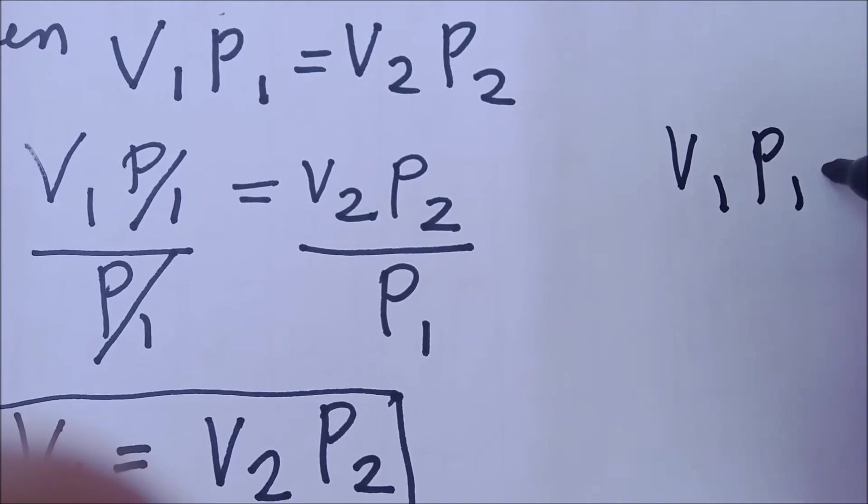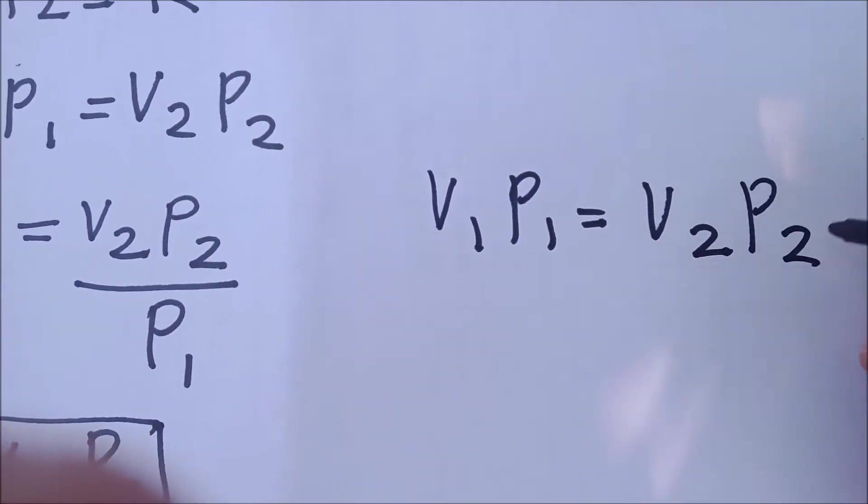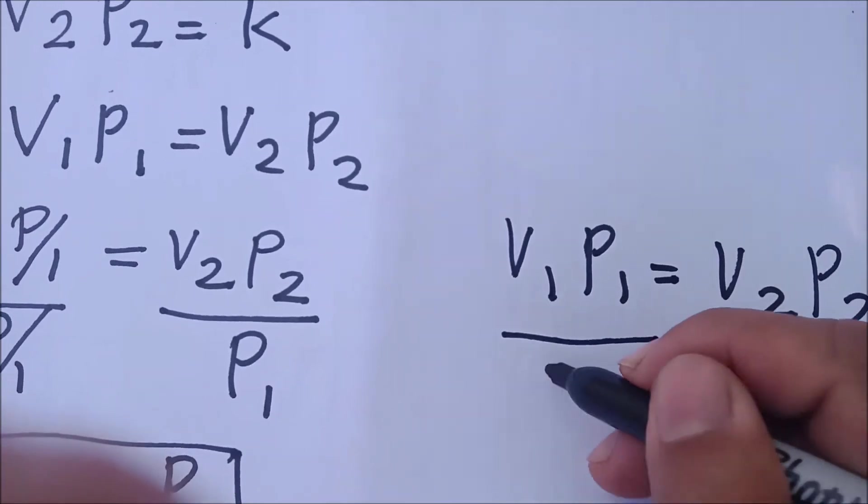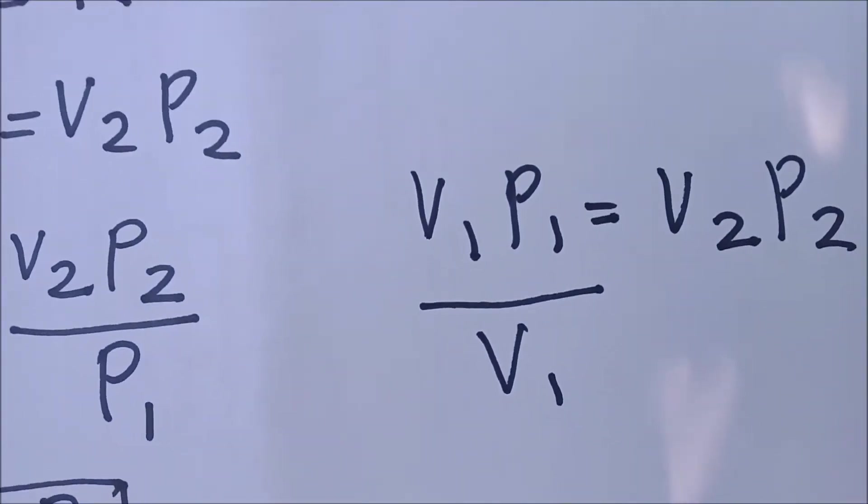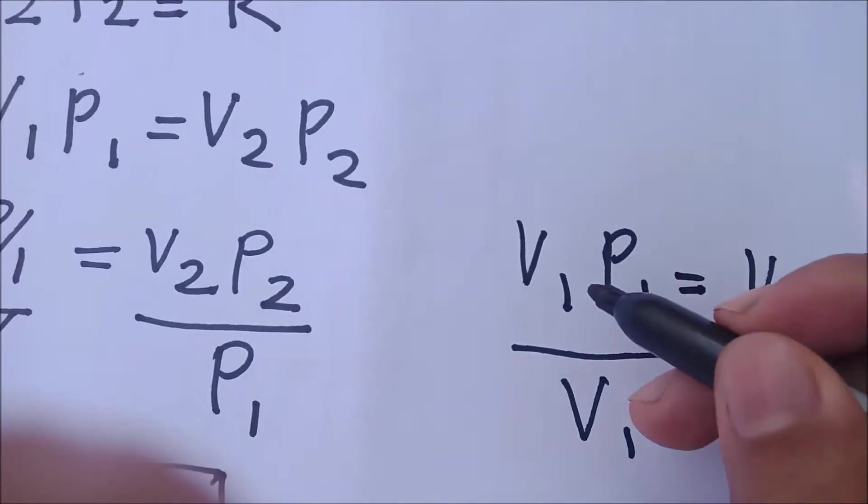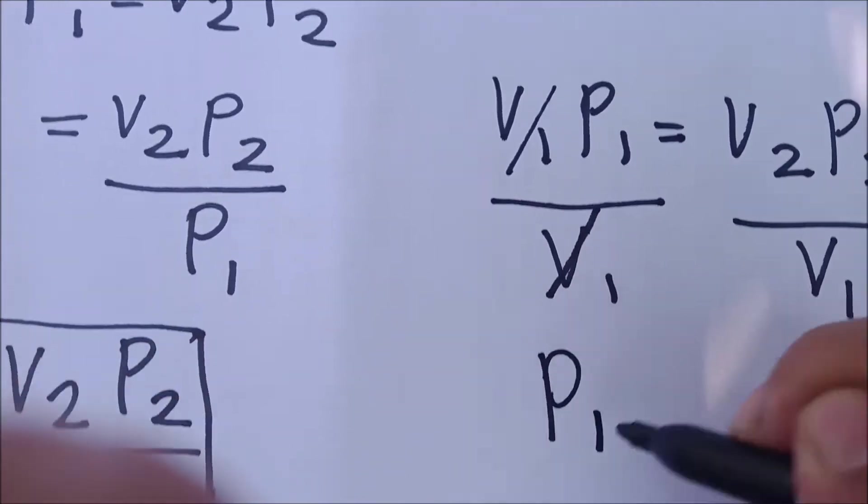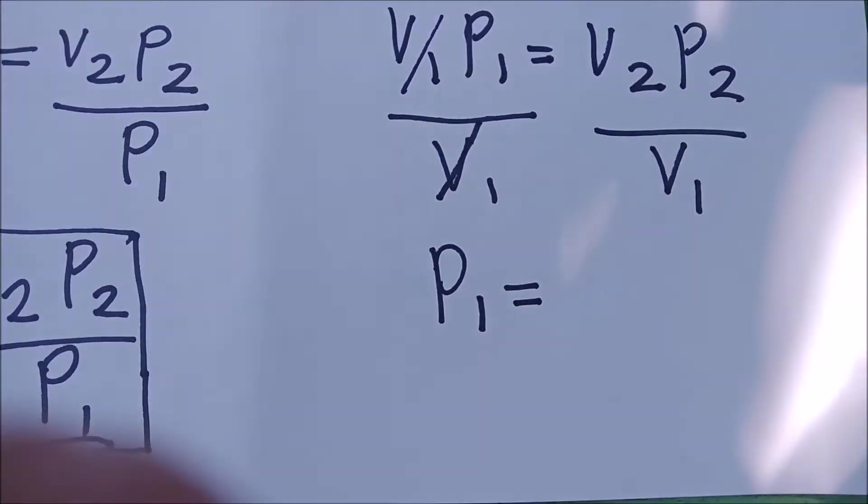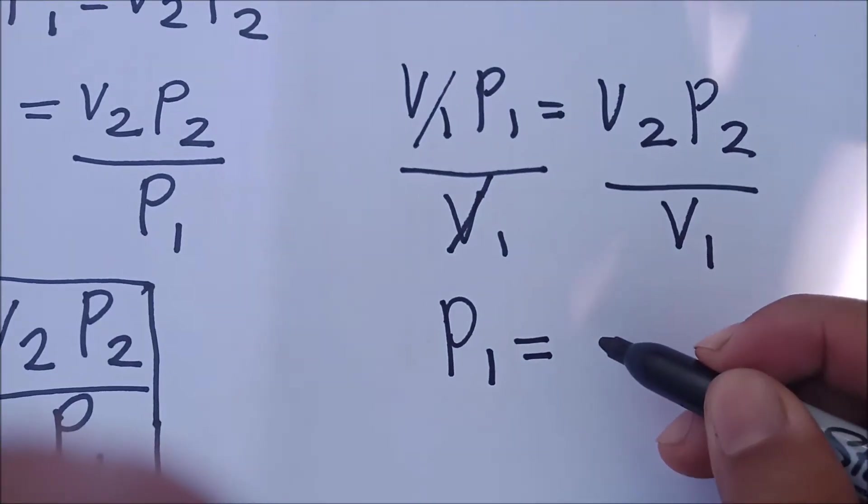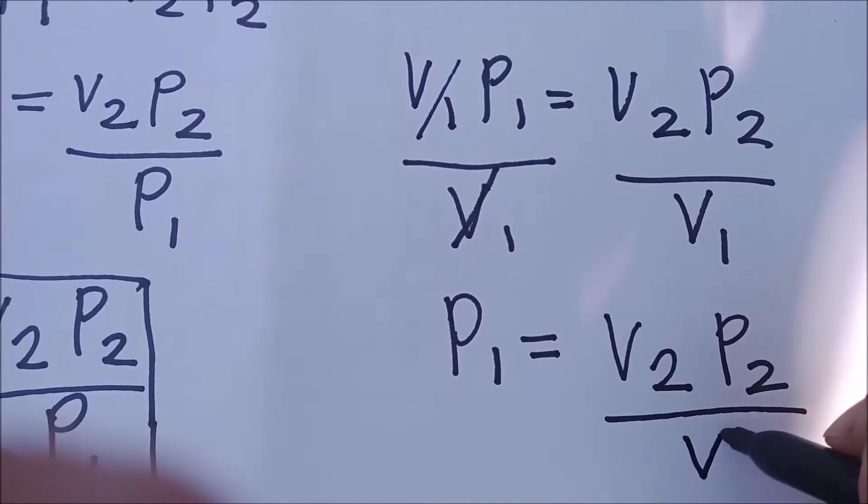V1, P1 is equal to V2, P2. We eliminate V1 this time on the left side of the equation by dividing both sides with V1. This one will be cancelled out. Obviously, your P1 can be found by using the formula V2 times P2 over V1.